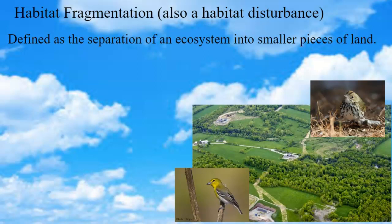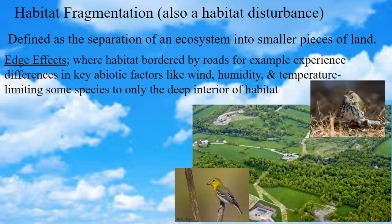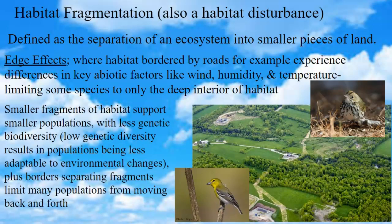Habitats bordering roads experience different abiotic factors than forest interiors — wind, humidity, and temperature can be different enough on the edge versus the interior to make it unsuitable for some species. Smaller fragments of habitat support smaller populations, leading to less genetic biodiversity, as we talked about with cheetahs. Low genetic diversity results in populations being less able to adapt to environmental changes.